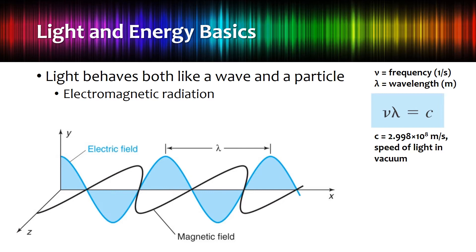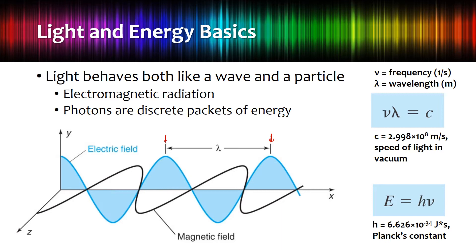As a wave, we have a couple of characteristics: wavelength — going from one peak to the next peak or from one trough to the next trough — measured in meters; and frequency, which is how many waves will pass by a given point per second, with units of one per second, or Hertz. If you multiply the frequency times the wavelength, you'll get c, the speed of light.